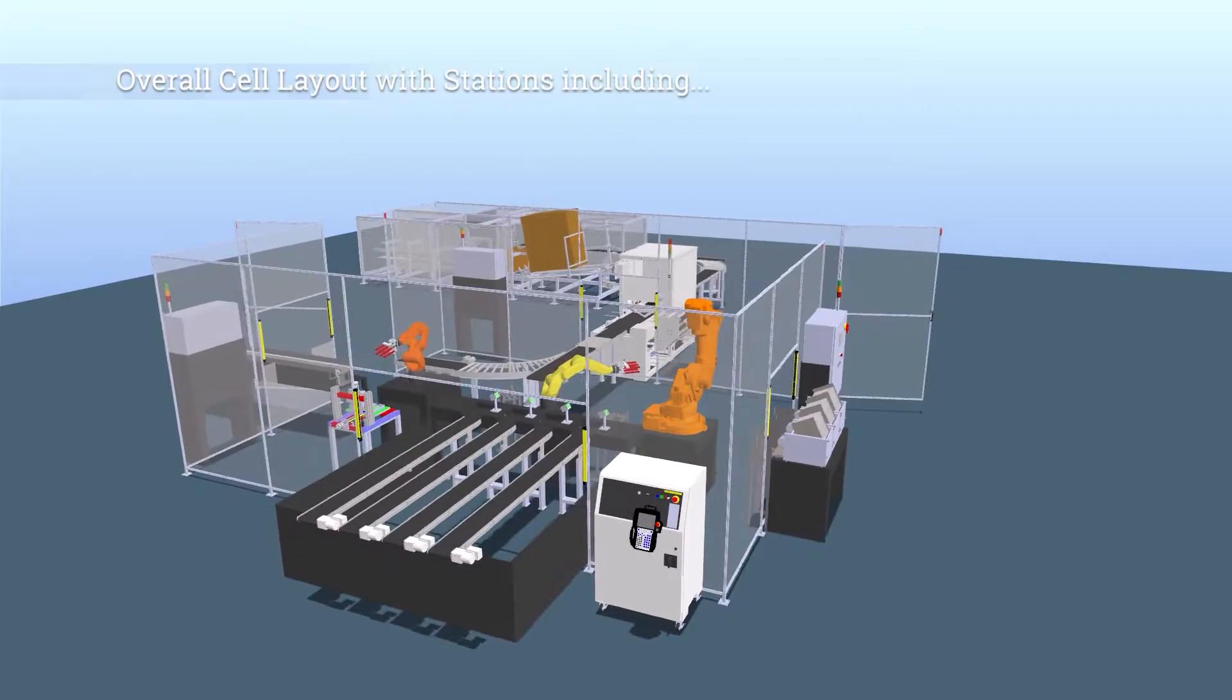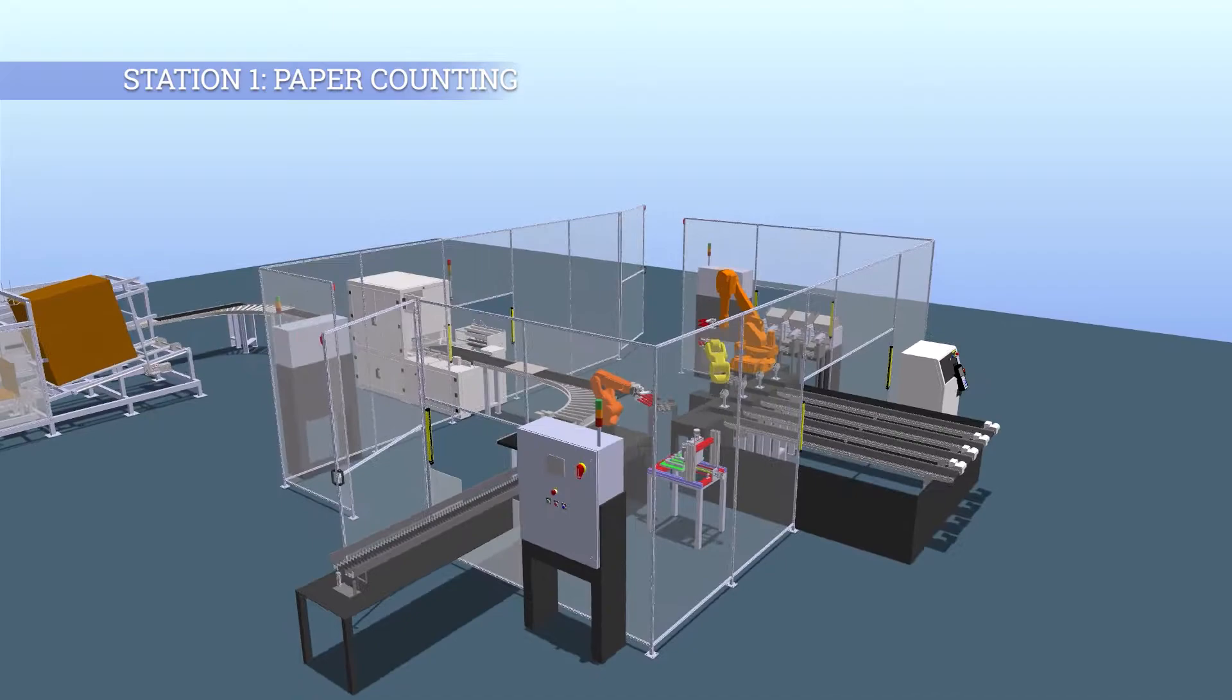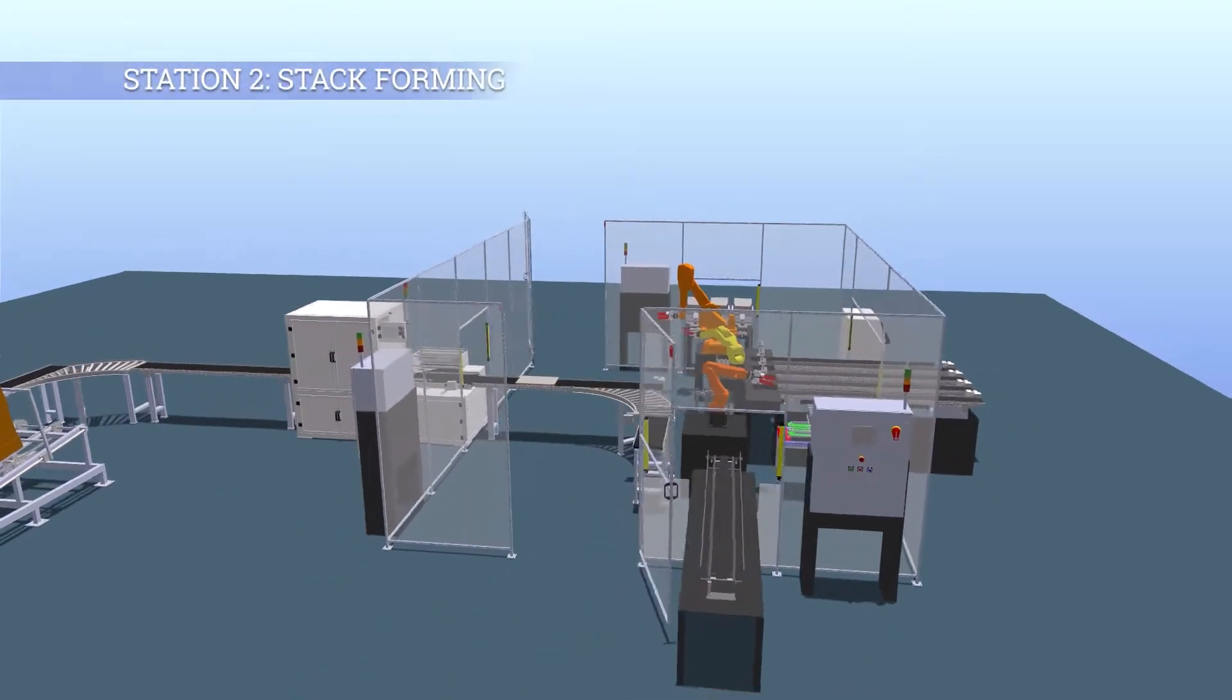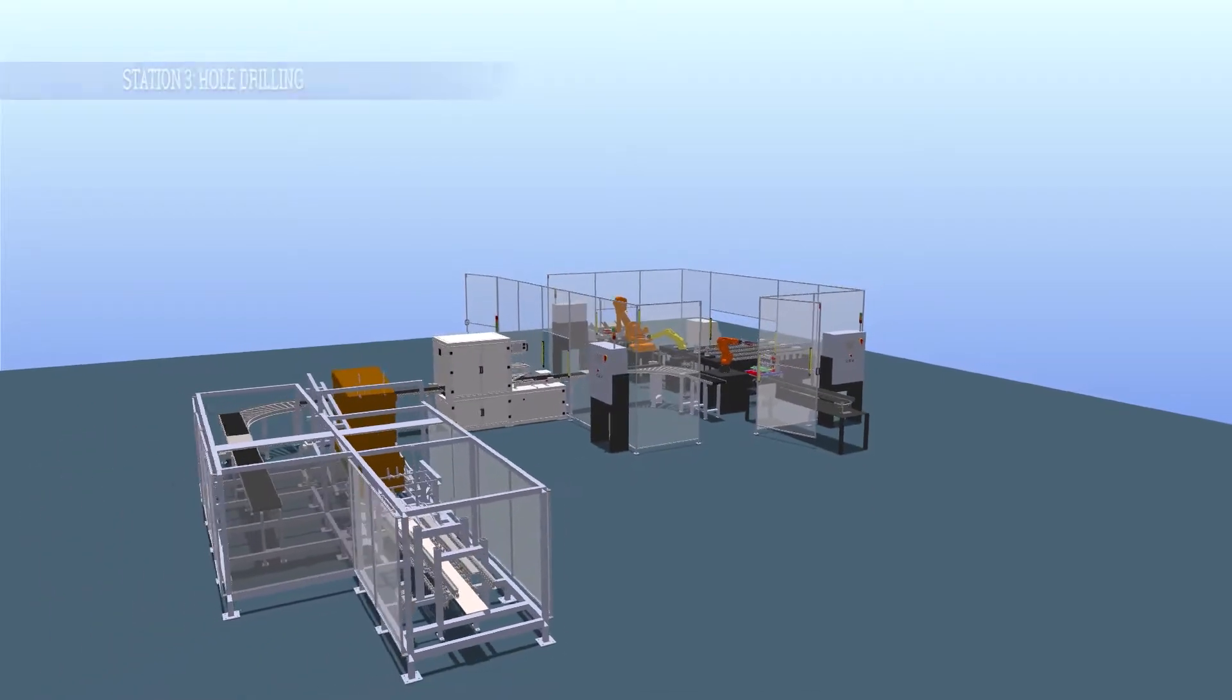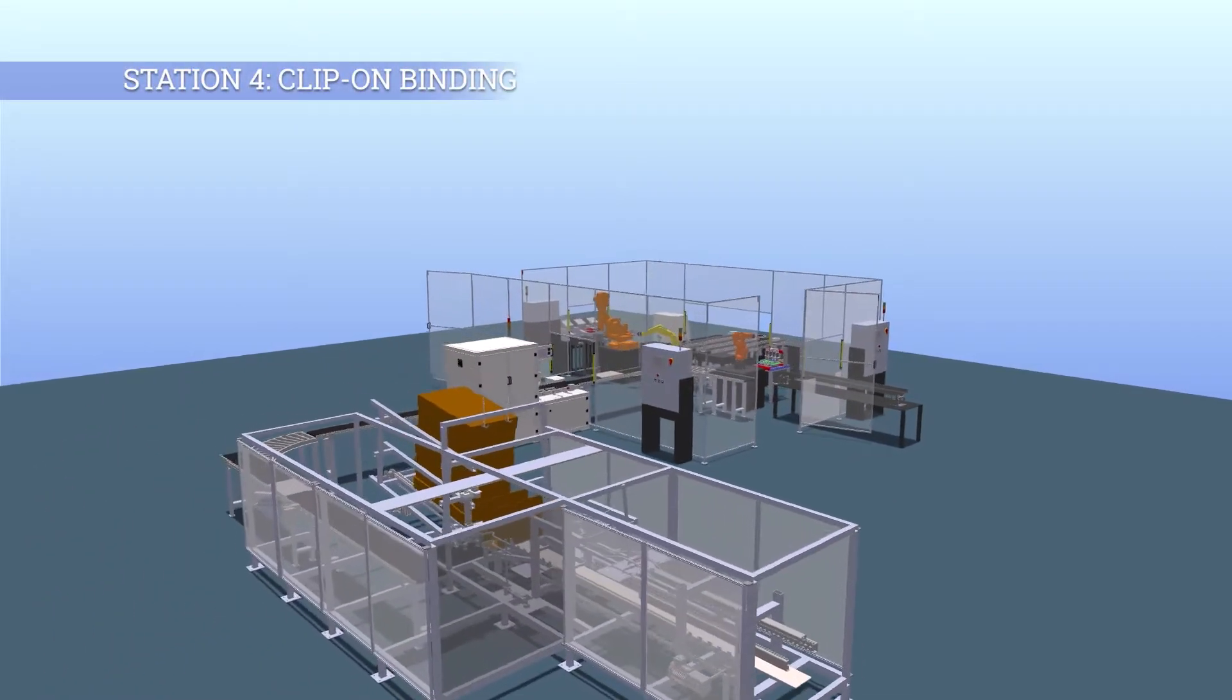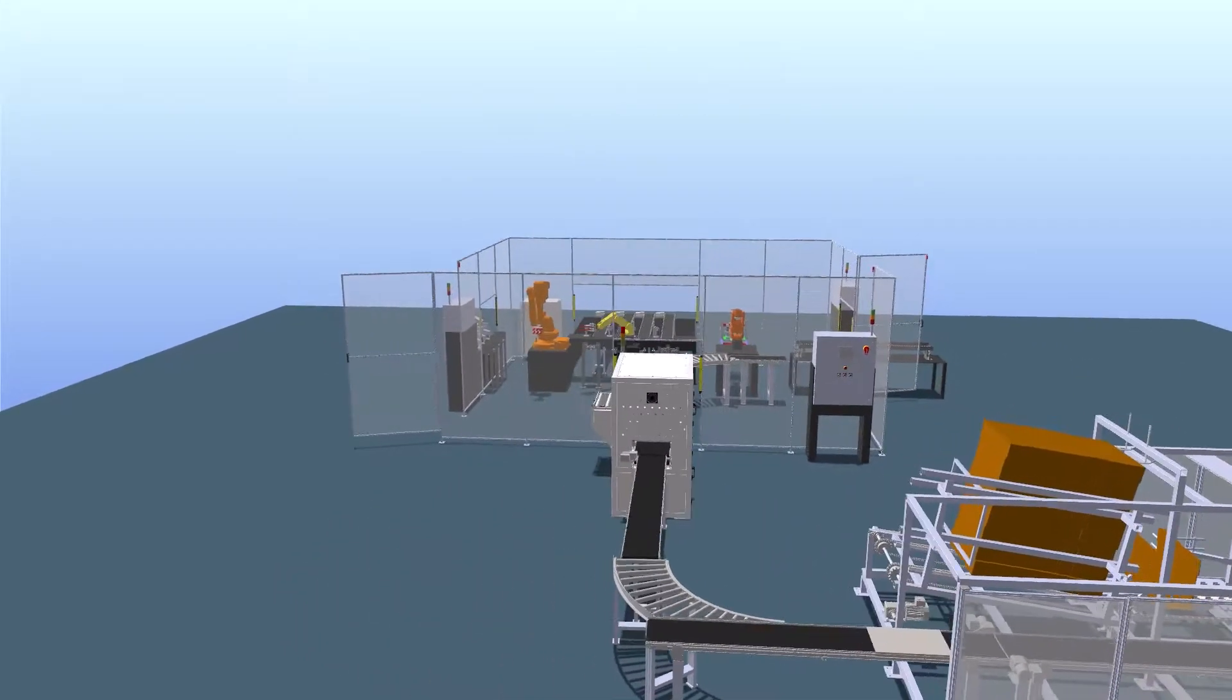Our cell design consists of five unique stations: the paper counter station, the paper stack forming station, the hole drilling station, the clip-on binding station, and the box forming, shrink wrapping, and case sealing station.